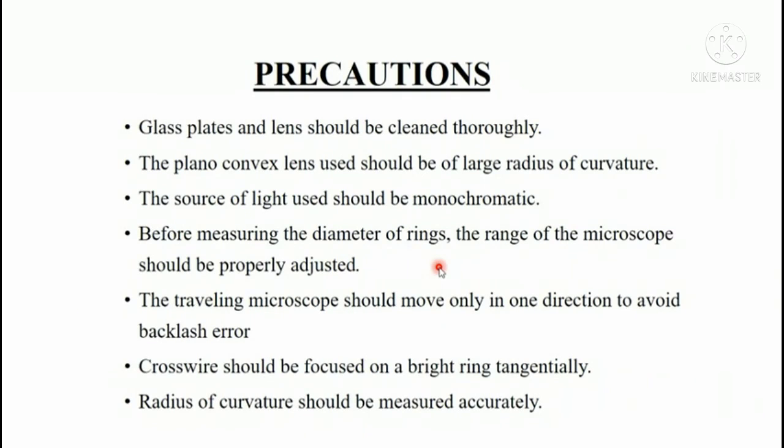Let us discuss the precautions we have to follow. First of all the glass plates and the lens should be cleaned thoroughly. The plano convex lens used should be of large radius of curvature so that we get a thin film and the source of light should be monochromatic. Before measuring the diameter of the rings the range of the microscope should be properly adjusted and the least count should be properly found. The traveling microscope should move only in one direction to avoid backlash error. The cross wire should be focused on a bright ring tangentially. The radius of curvature should be measured accurately.